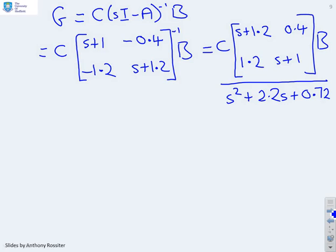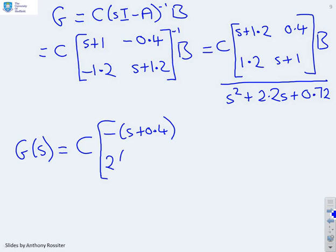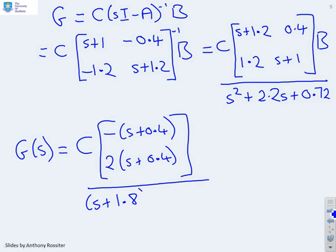And then that's all going to be divided by S squared plus 2.2S plus 0.72. Now what I'm going to do next is multiply through by B and I'm going to factorize the denominator. So we've now got G of S equals C. Now if I multiply that square brackets by B, you'll get this minus S plus 0.4 and then you'll get 2 into S plus 0.4. And then the denominator, if I factorize the denominator, you'll see it takes the form S plus 1.8, S plus 0.4.